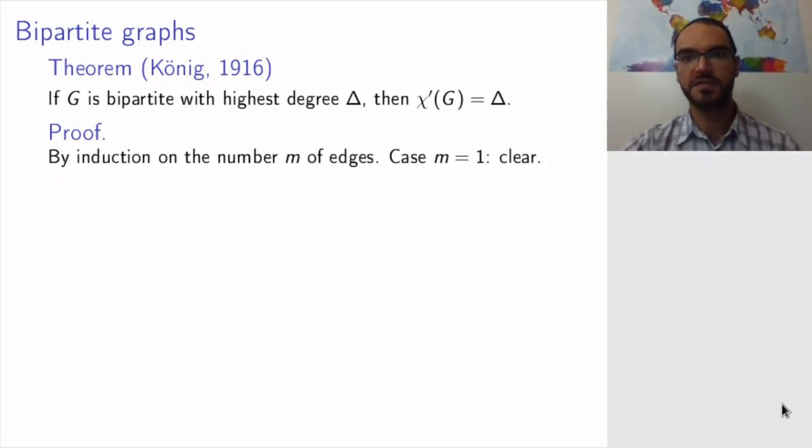Let us now look at another important class of graphs, namely bipartite graphs. For bipartite graphs, we have a theorem by König from just over 100 years ago that says a bipartite graph is Δ edge colorable, where Δ is the highest vertex degree.